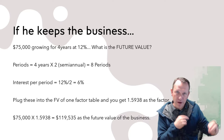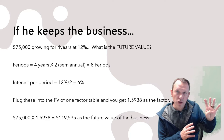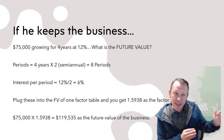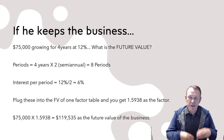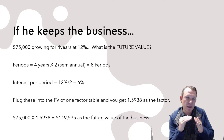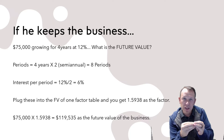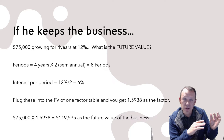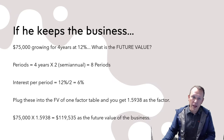The interest will be compounded every period across eight periods total. The original interest rate given is always annual unless otherwise stated, so we convert 12% annual to semi-annual by dividing by two, giving us 6% per period. Plugging eight periods and 6% into the factor table gives us a factor of 1.5938. Multiplying our $75,000 current value by that factor gives us a future value of $119,535 — that's what the business would be worth if Pete held on and didn't sell it.